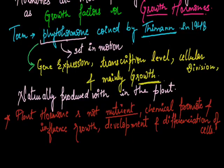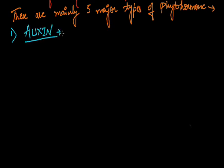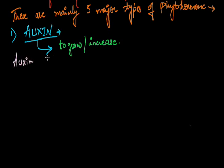Now we will discuss about the various classes of the phytohormones. There are mainly five major types of phytohormones. We will discuss each of them one by one. The first class is auxin. This auxin word is taken from the Greek word which means to grow or increase.